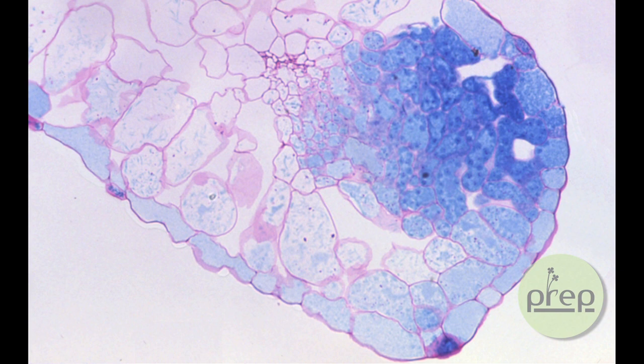The next picture shows the hydathode cross-section, so the same blue staining here of the cells. Here the small cell represents the vascular tissues. The xylem is arriving here.